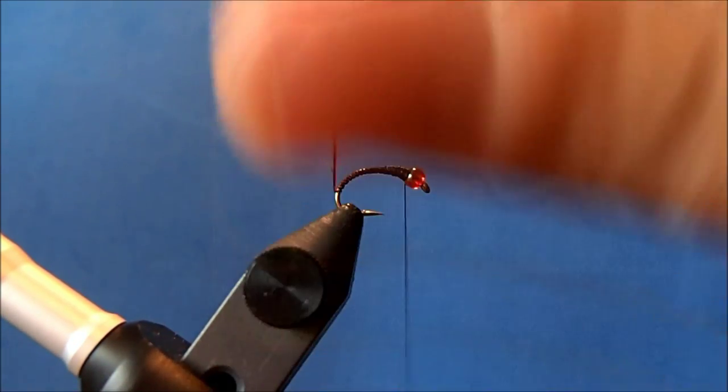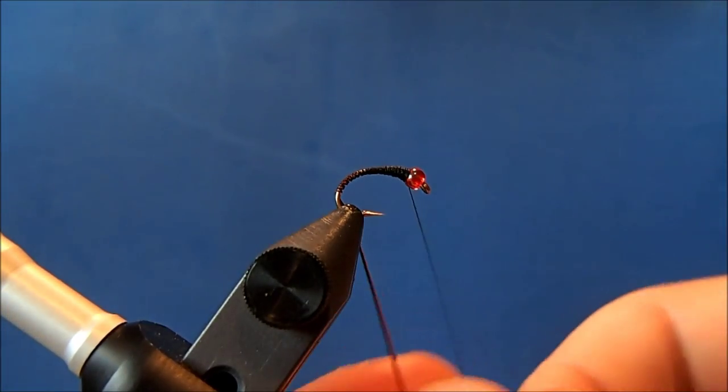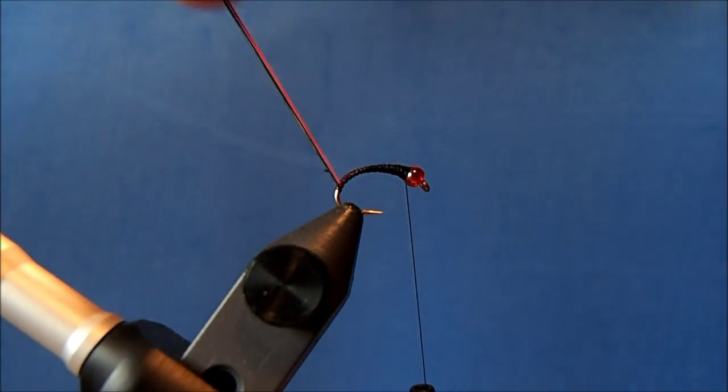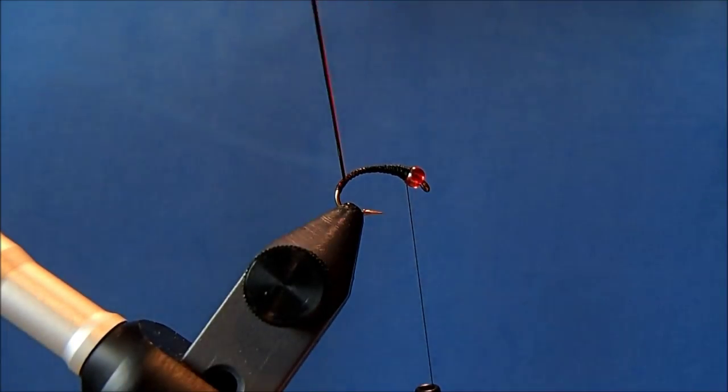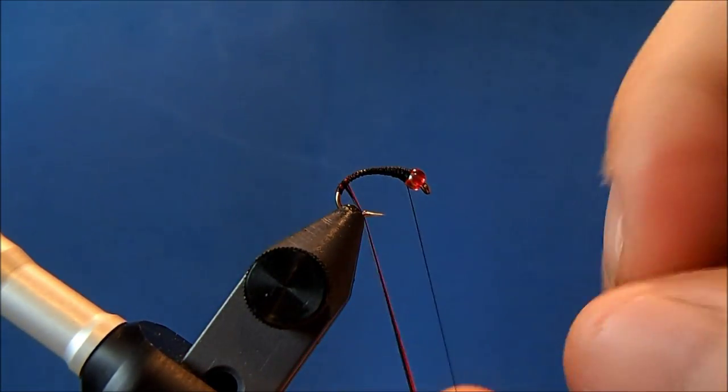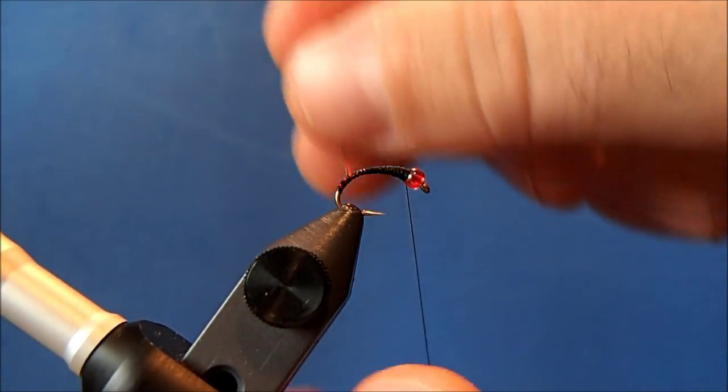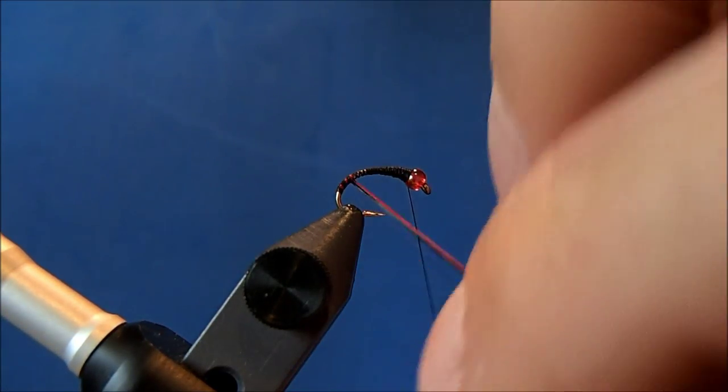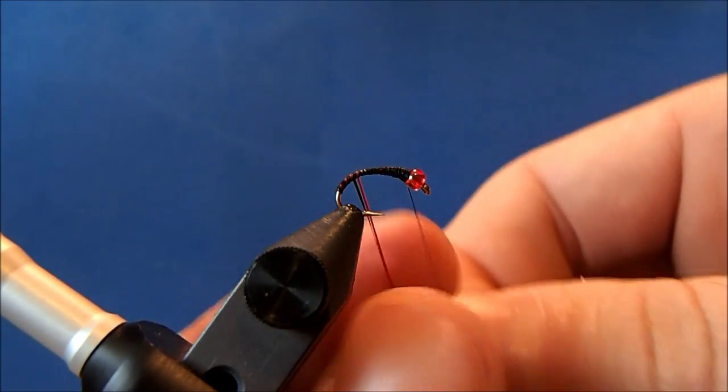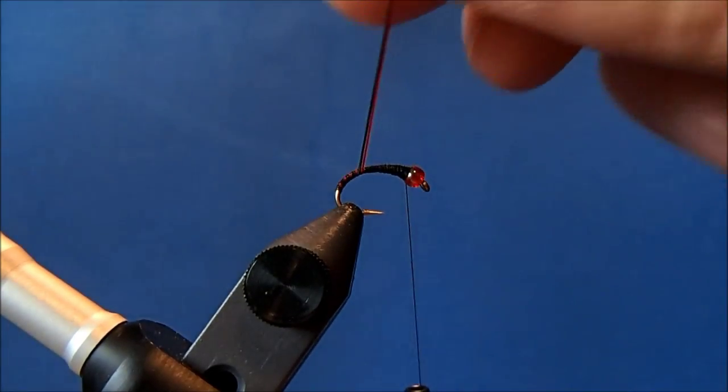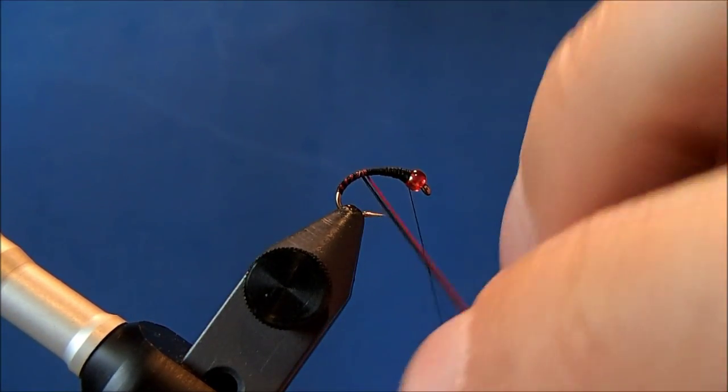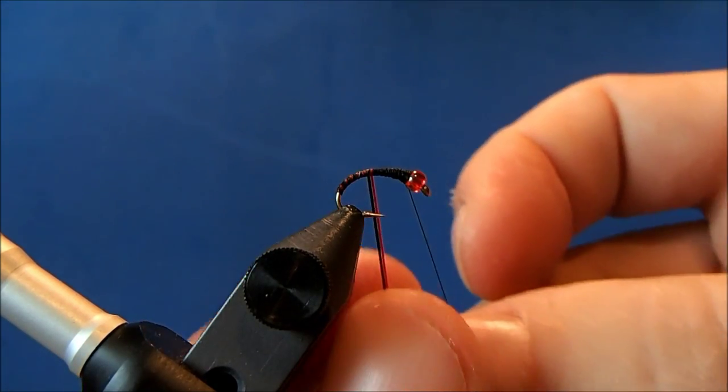Now I'll wrap these up together. One of the benefits of using a thread color that corresponds with one of the hurl colors is that if you don't keep these exactly side by side as you go up, that black will show through and cover some of your mistakes.